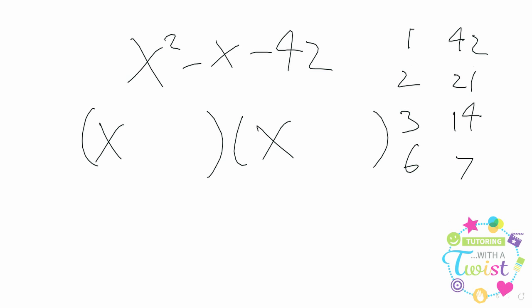So we want two numbers here where their difference is negative 1. Obviously these two won't work, neither will any of those. Six and seven are going to be what we're looking for. We know that one of them is going to have to be negative, so we'll make the larger one negative so that their sum is negative. Ta-da, you've done it beautifully. There is the way that you would factor out this equation.